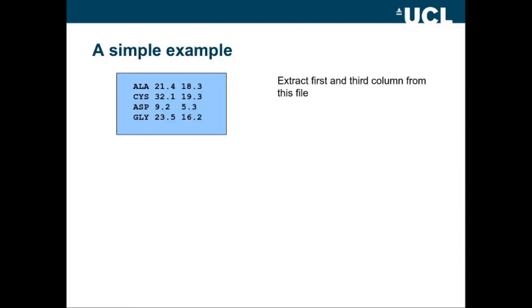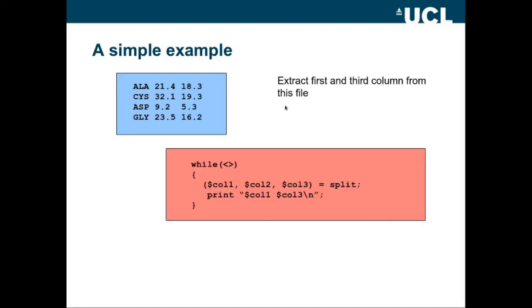Now here's a simple Perl example, which I think I showed you in the previous lecture, where we're wanting to extract the first column from this data file and the third column. All we need to do in Perl is these five lines of code. We say while less than greater than and that means read from a file, either the file specified on the command line or from standard input, which could be the output of another program. And what we're going to do on each line in turn is split the line into columns. And we do that using the split function. And then we're going to print column one and column three and return character. So the output from this would look like this.